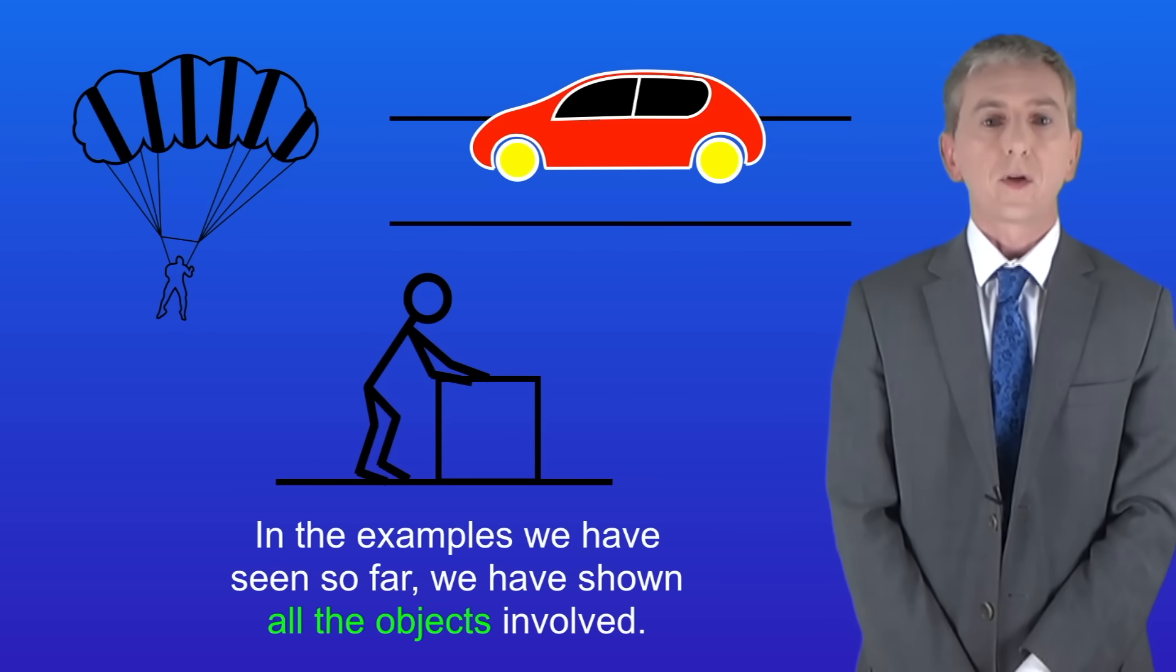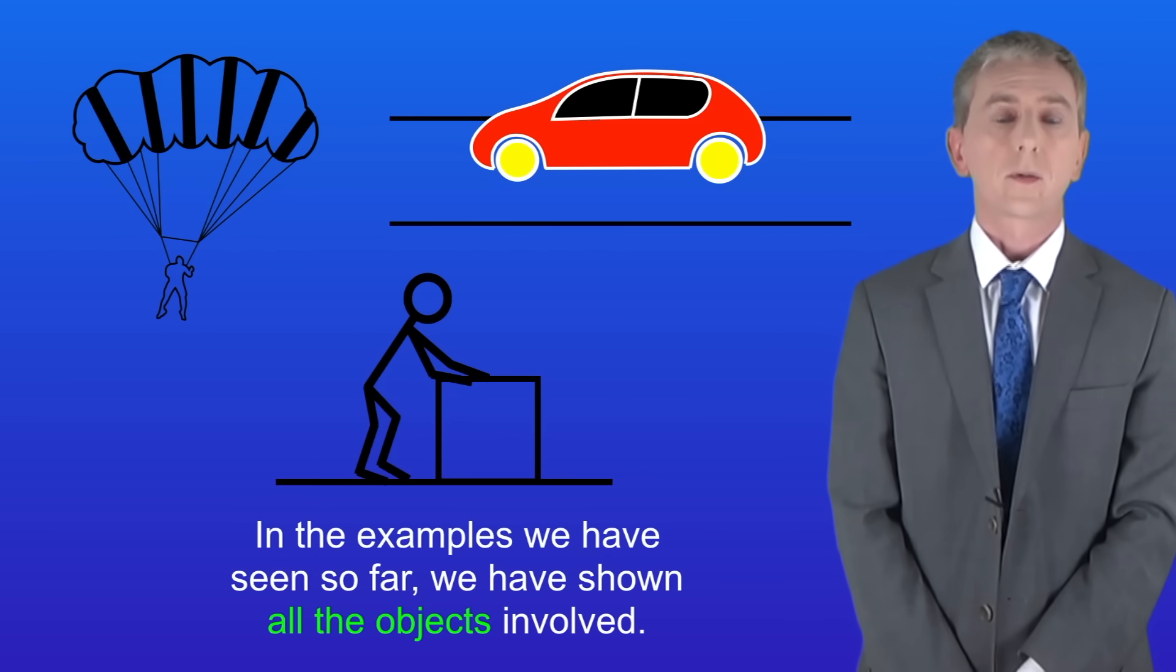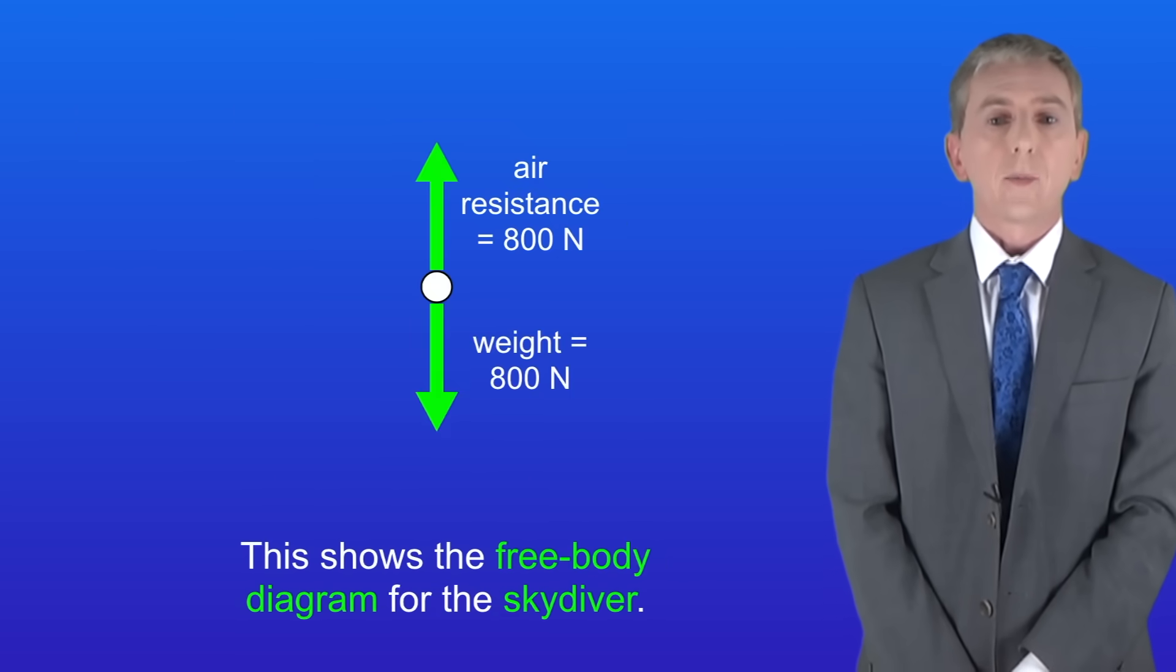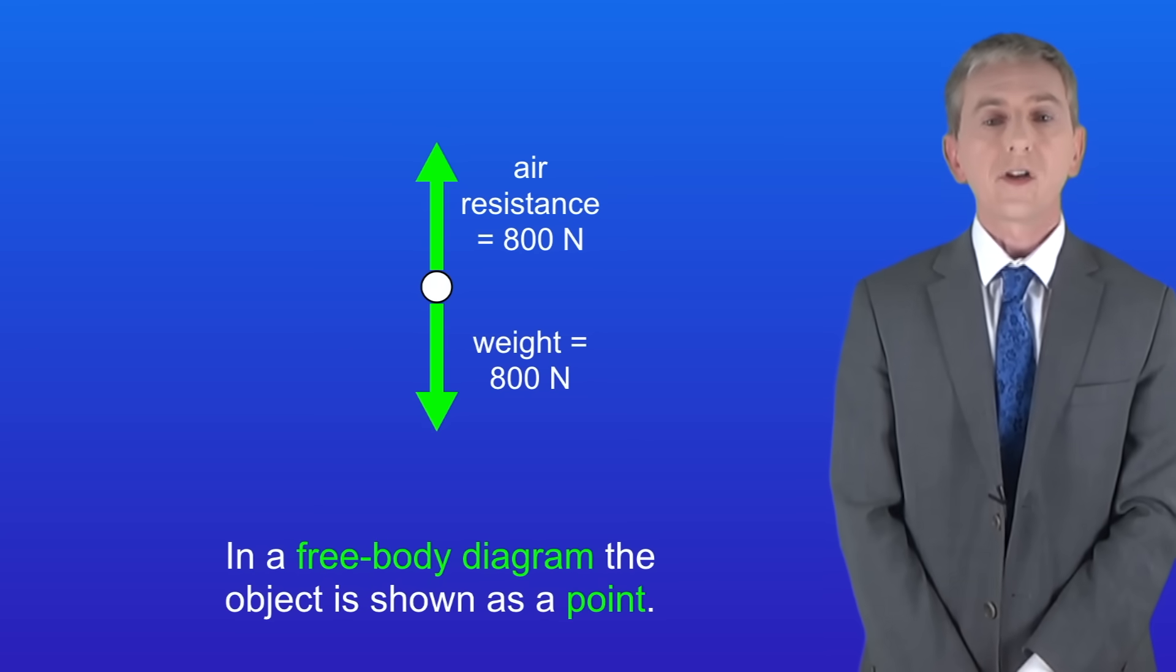Now in the examples we've seen so far, we've shown all the objects involved. However, it's much easier to draw a free body diagram. I'm showing you the free body diagram for the skydiver here. In a free body diagram the object is shown as a point.